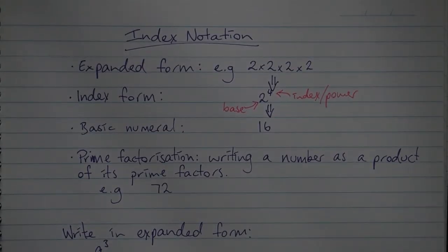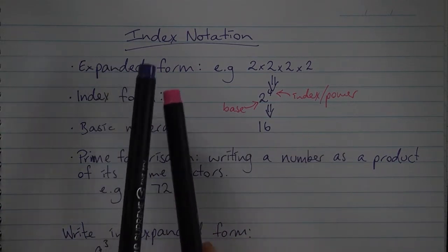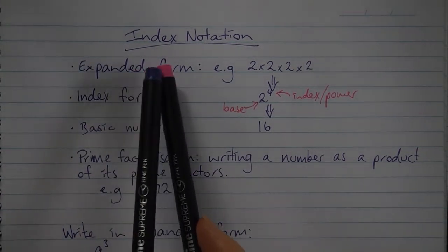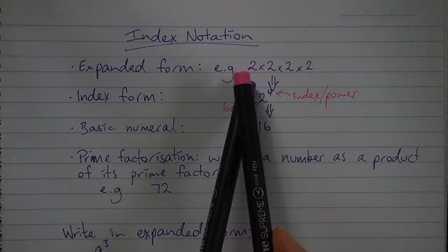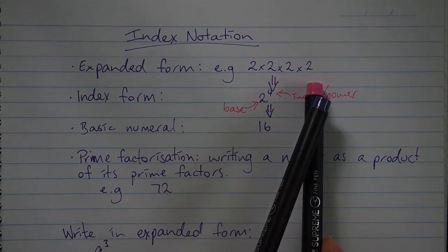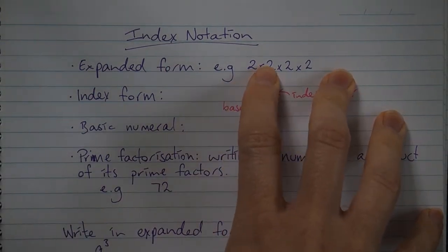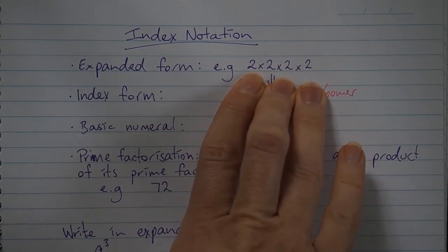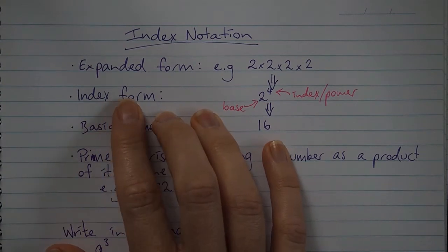Looking at index notation today. Index notation is basically just a fancy way of saying writing numbers as powers. There are a few terms we need to be aware of, because in lots of different questions you might be asked to give your answer in a particular form. Expanded form means writing the number out as a repeated multiplication — for example, 2 times 2 times 2 times 2. Expanded form must show your multiplication symbols.